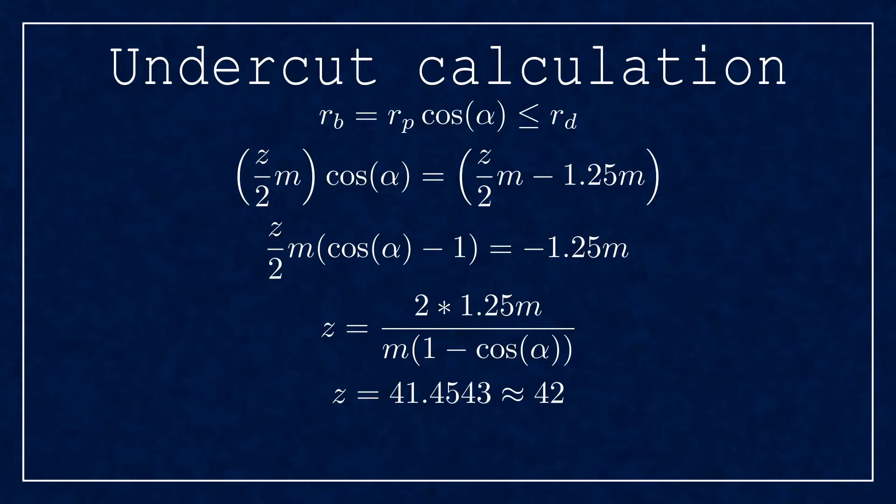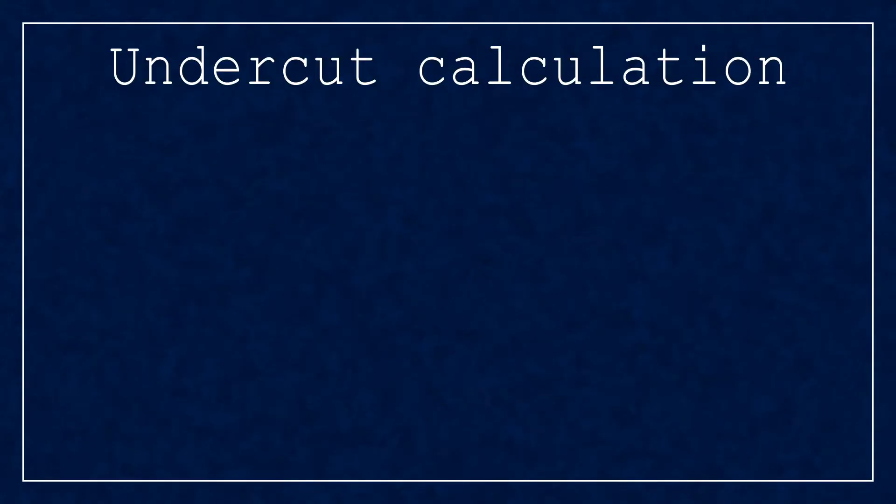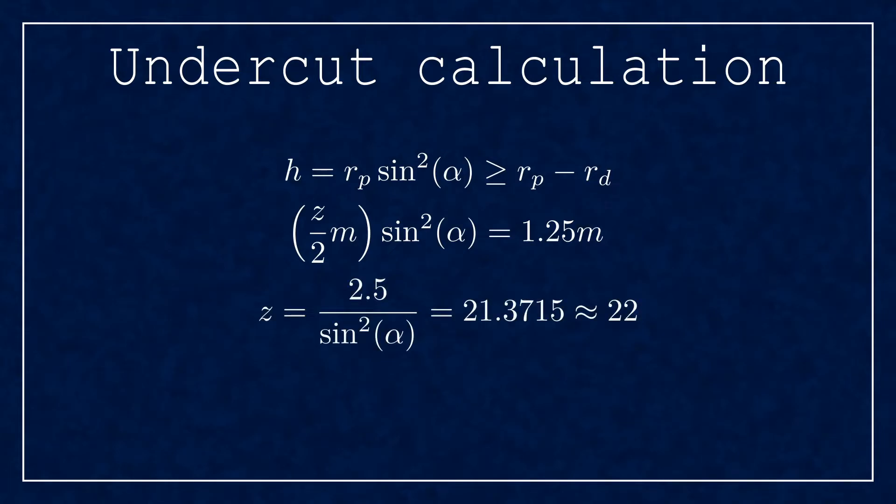The second condition to avoid the undercut is related to the rack profile connecting to the gear. The height of the base point of the involute curve should be above the dedendum line or the tip line of the rack. From these equations you'll find that the minimum number of teeth is about 22.